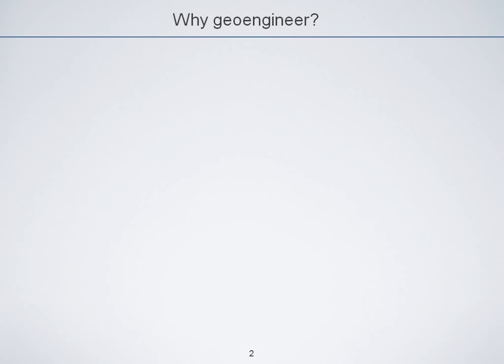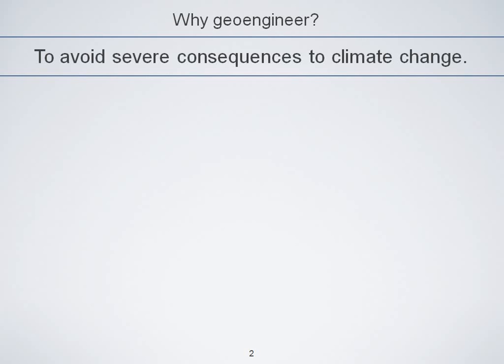So why would we geoengineer? To first order, the purpose of geoengineering is to cancel global mean temperature rise that would occur under increased anthropogenic greenhouse gases. But in reality, we would really want to geoengineer to avoid severe consequences to this temperature rise. If there were no severe consequences, we may not be talking about global warming so much.